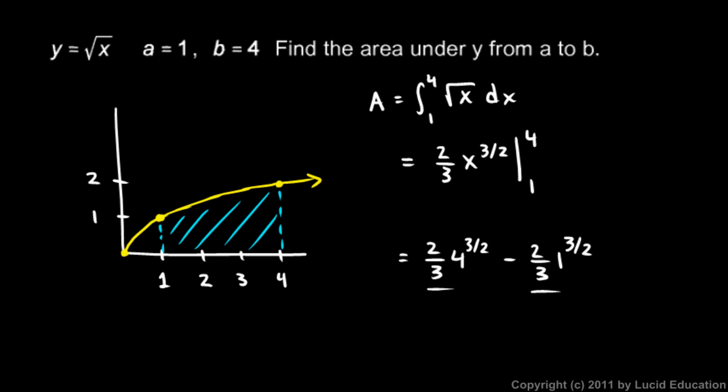And we could factor out the 2 thirds as well. So we get 2 thirds, and then 4 to the 3 halves. Well, what is 4 to the 3 halves? Well, this is a power of 3, and then a square root. So let's do the square root first. 4 square rooted is 2 to the power of 3 is 8. So this is 8 minus, and then over here, the 2 thirds is already factored out. So we just have 1 to the 3 halves, which is just 1.